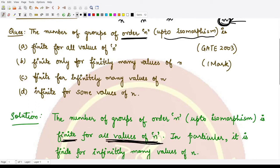If we take any value of n, if you take any order of the group, then the number of groups up to isomorphisms which are having order n are finite in number. So we can only construct finite number of such groups from here.